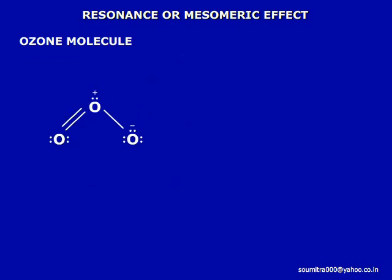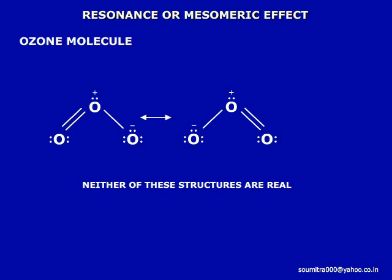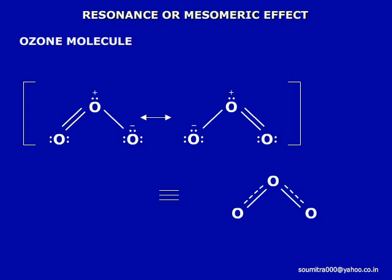By the same procedure, we may draw another Lewis structure like this. Now the matter of fact is that neither of these structures are real. The real structure is actually an intermediate between these two structures. This can be understood from the fact that the oxygen-oxygen bond length in ozone is 128 picometers, which is a value intermediate between the oxygen-oxygen double bond at 121 picometers and the oxygen-oxygen single bond at 148 picometers. The two bond lengths in the actual structure are equal.